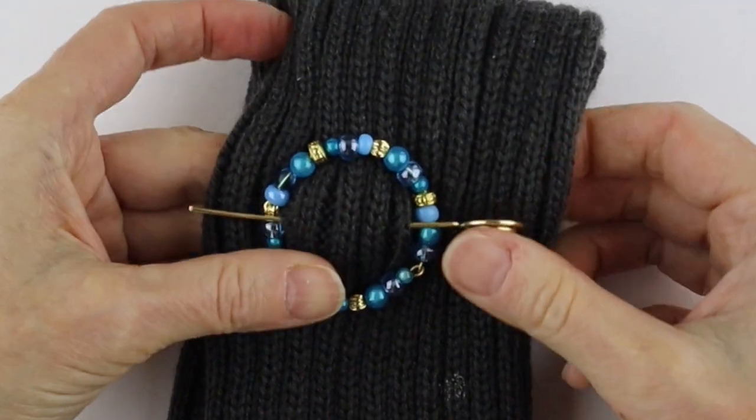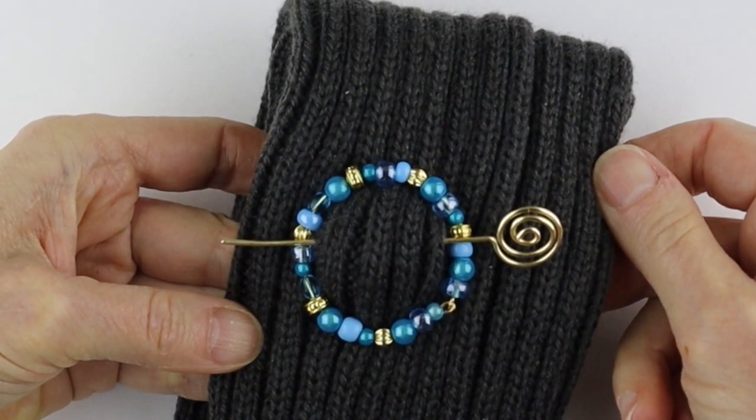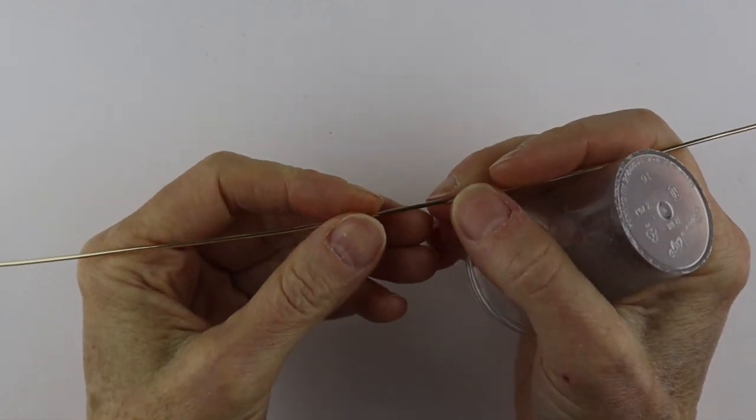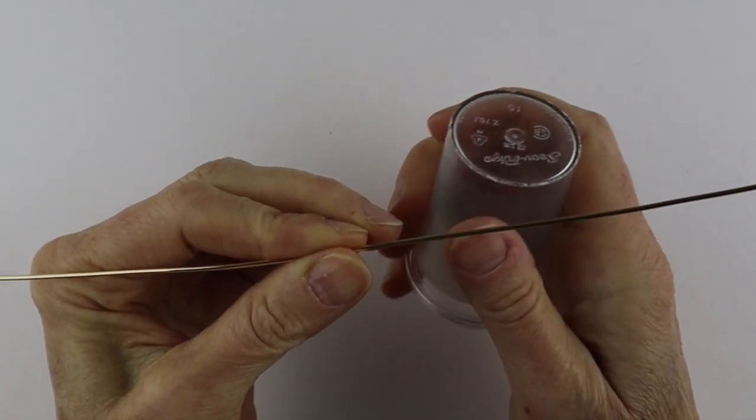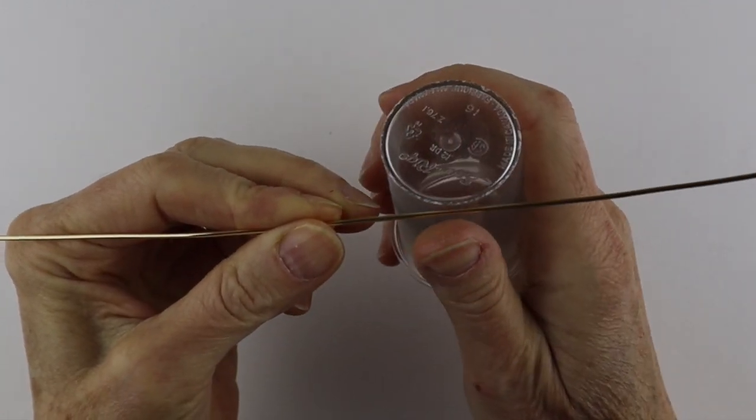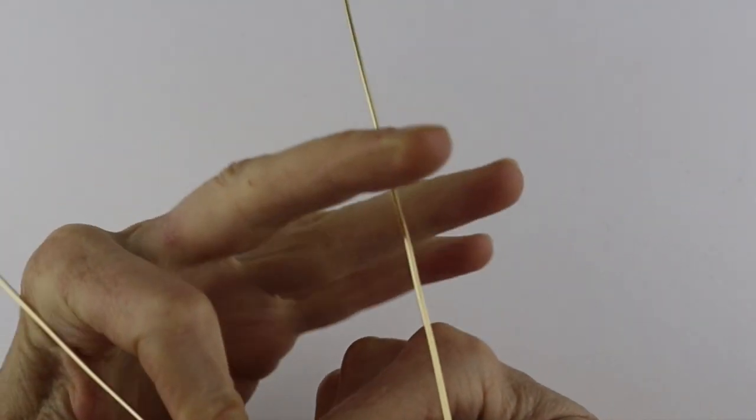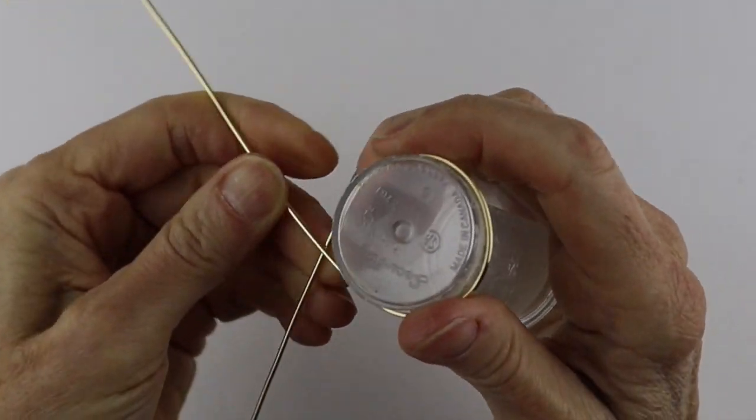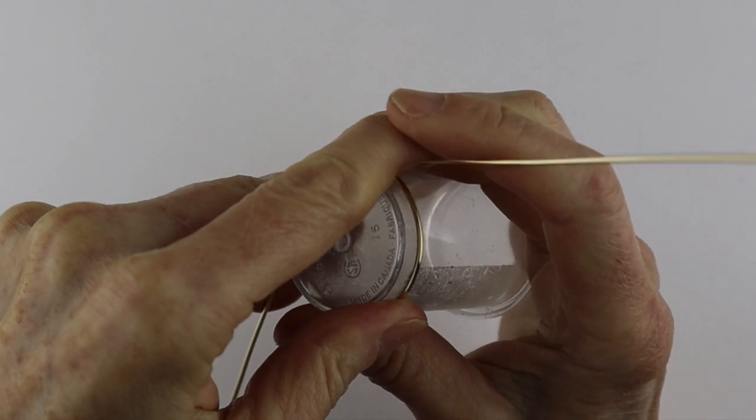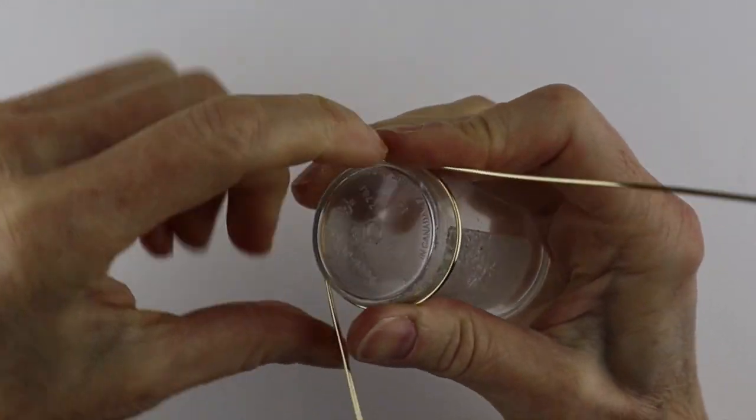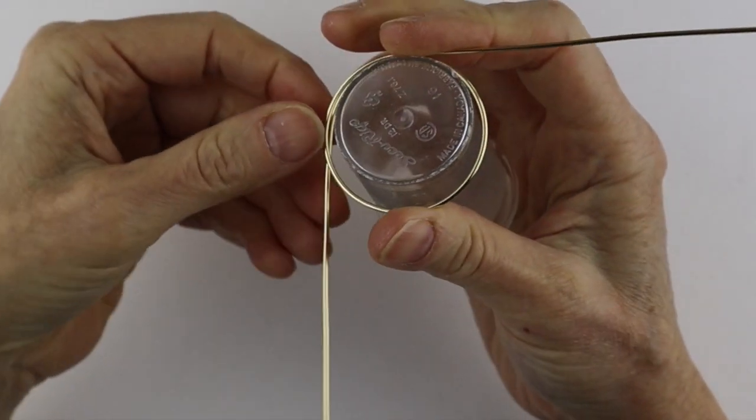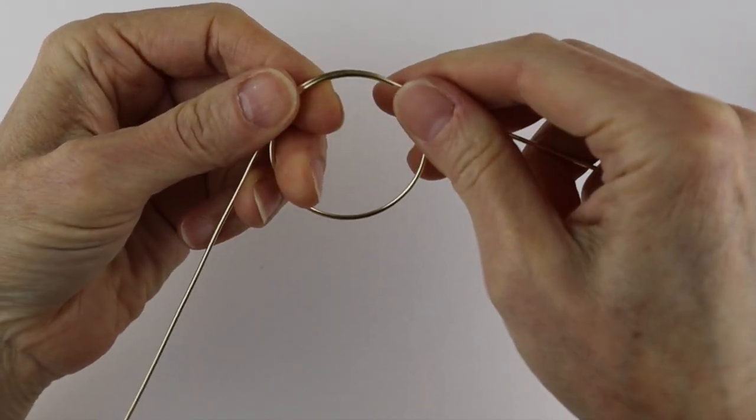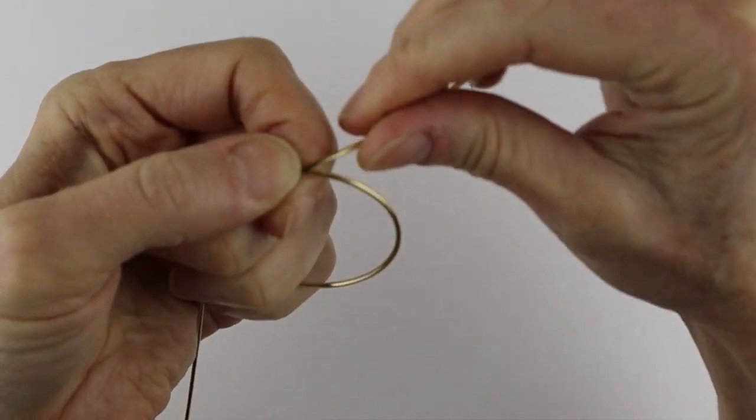For another simple design, it's actually similar to the ring I made last week for the lariat video. Just take a longer piece of wire and wind it around your form. You can wind it around once or twice depending on how thick you want it. You could do it once or twice. Say we just do it once because it is a thick wire.